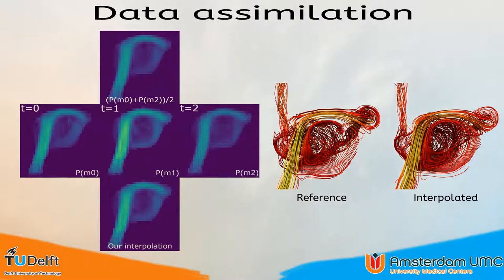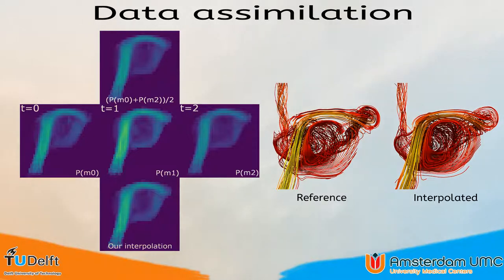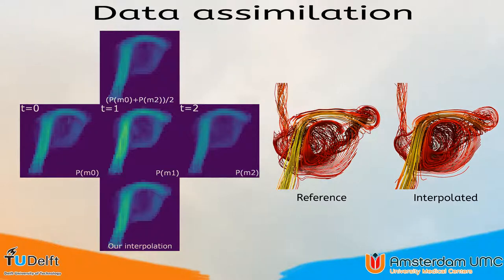For the evaluation of temporal interpolation, we leave out one measurement and compare with this measurement. Typically, linear interpolation is used for the temporal interpolation of PC-MRI data, hence we also compare with linear interpolation here. The middle row shows the measured data, while on top is the linear interpolation and on the bottom is our approach. For completeness, a streamline visualization is also shown on the right. In comparison with linear interpolation, our method represents the left-out measured data more closely. Since our approach is physically based, it covers the transportation of the flow in a natural way, while linear interpolation fails to do this correctly. For a more quantitative evaluation, we refer to the paper.